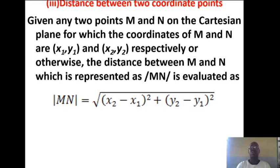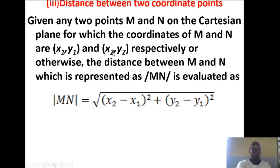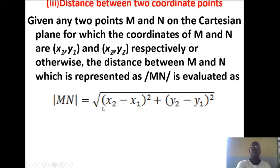How do we find the distance between two points? Given any two points on the Cartesian plane, for which the coordinates are given as (X1, Y1) and (X2, Y2) respectively, the distance between M and N, represented by |MN|, is evaluated following Pythagoras' theorem as the square root of (X2 − X1)² + (Y2 − Y1)². That is the formula. Please write everything down.